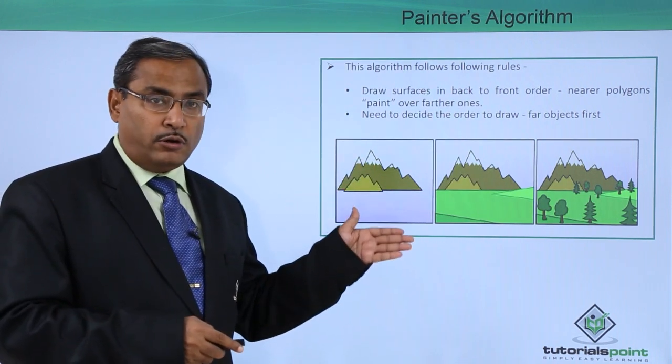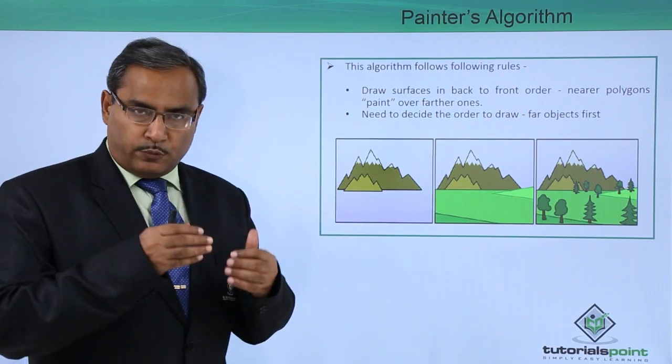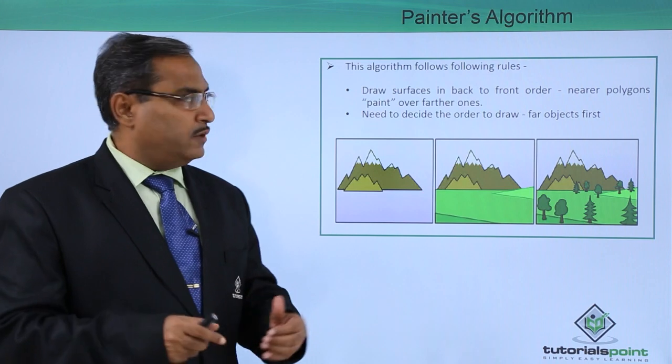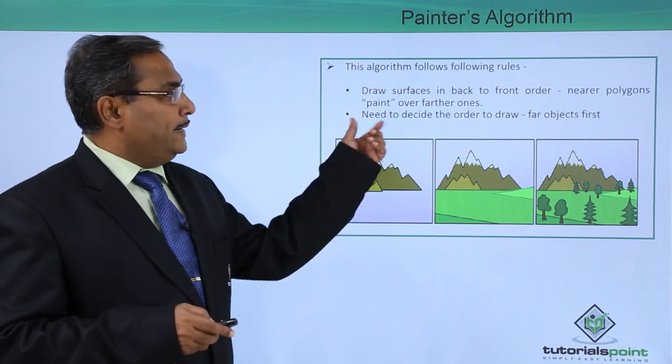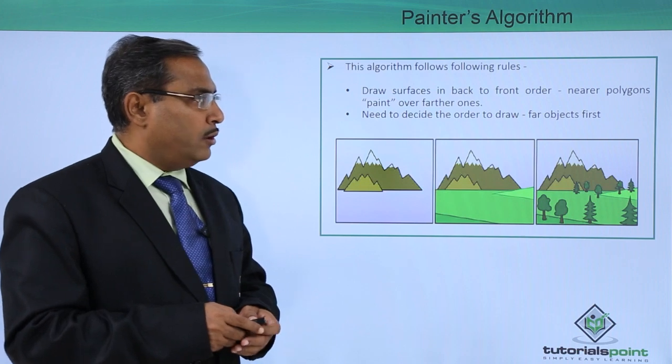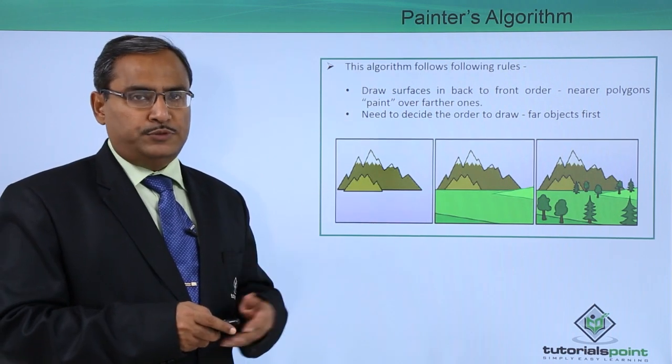Here these surfaces will be drawn from back to front in this order and the polygons which will be nearer to the viewer will be painted over the further ones. We need to decide the order to draw and obviously, we shall start by drawing the far objects at first.